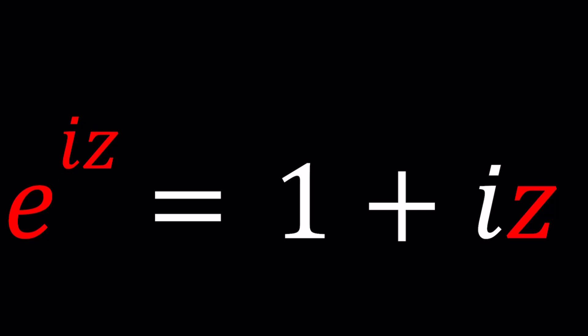So we have e to the power iz equals 1 plus iz and we're going to be solving for z values. I'll be presenting two methods and hopefully you like both of them, or if you favor one over the other please let me know. And if there's a third way to solve this problem I would be more than interested to know.